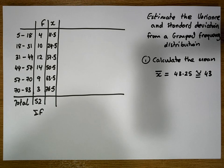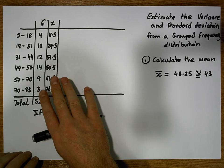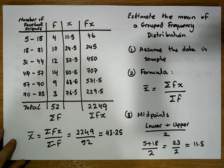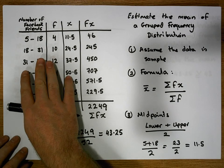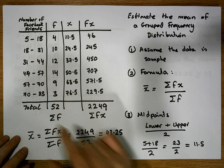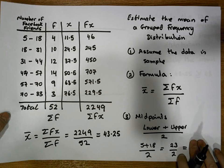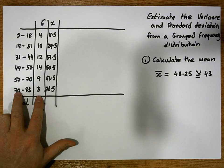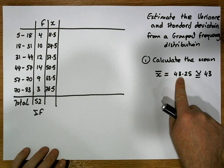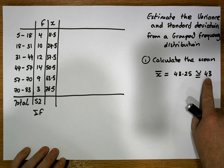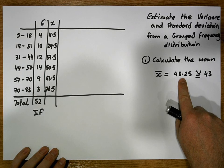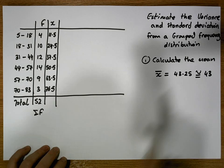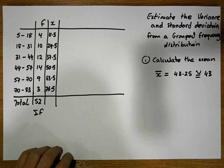For this particular video we're going to assume that we've already calculated the sample mean for this grouped frequency distribution. In the previous video we calculated the sample mean to be 43.25, and we're going to round to the nearest whole number, so we'll assume the sample mean is approximately equal to 43.